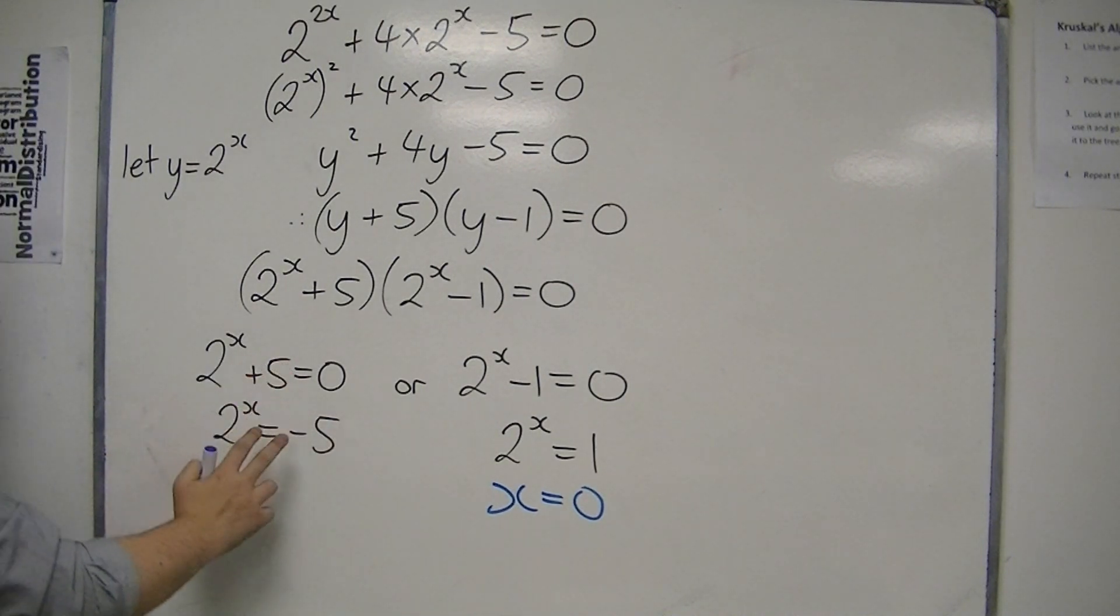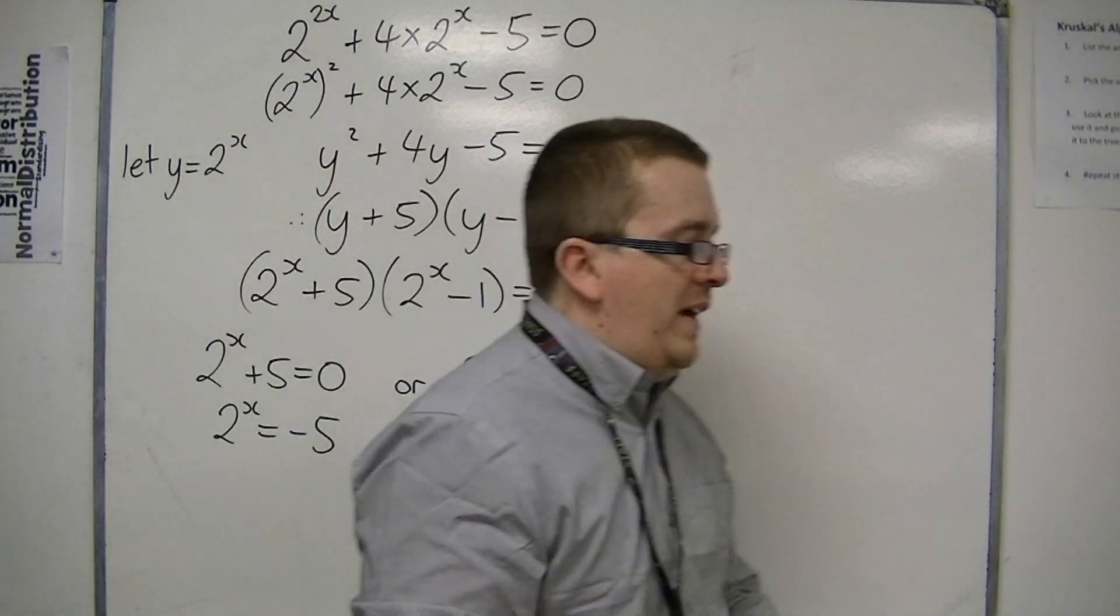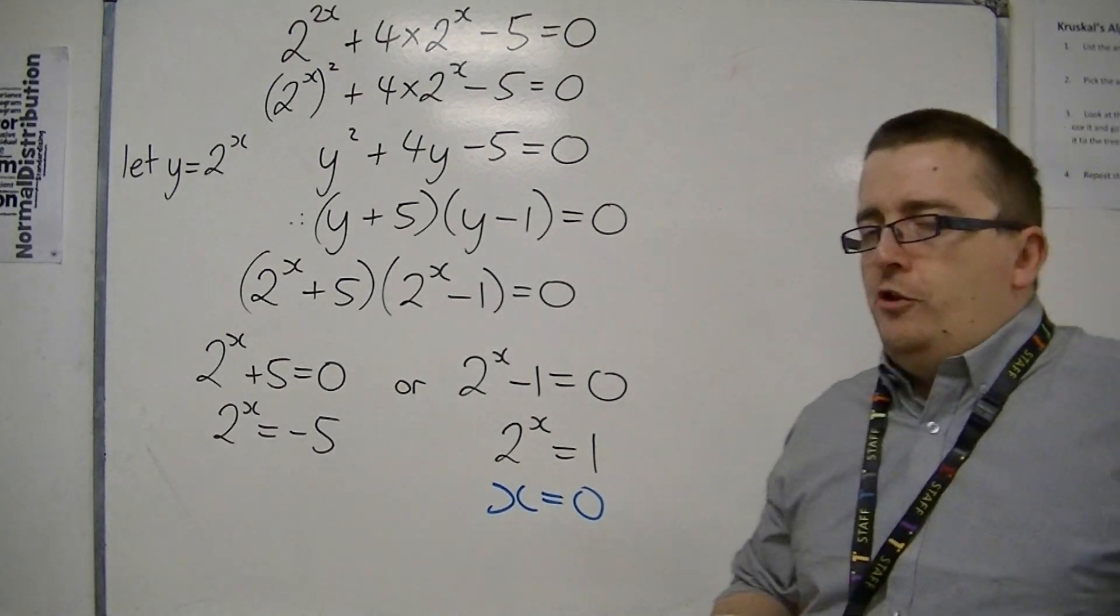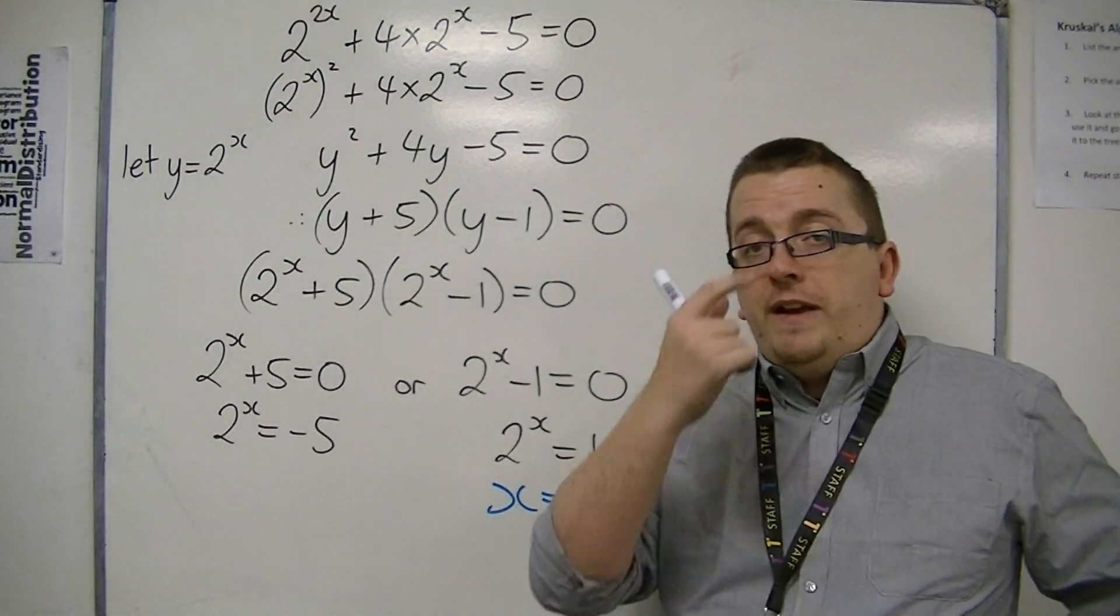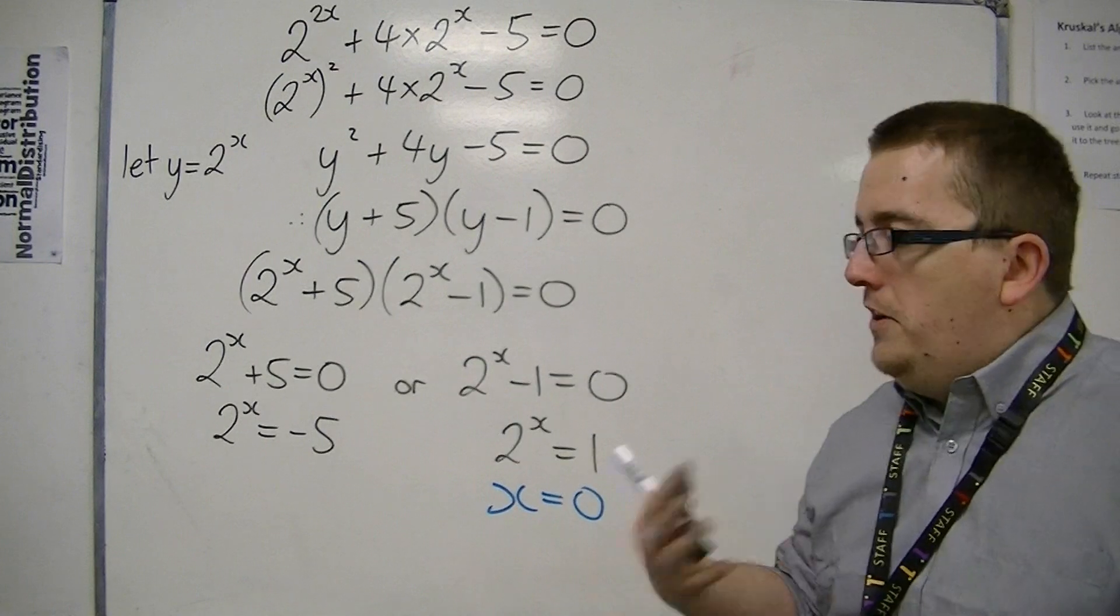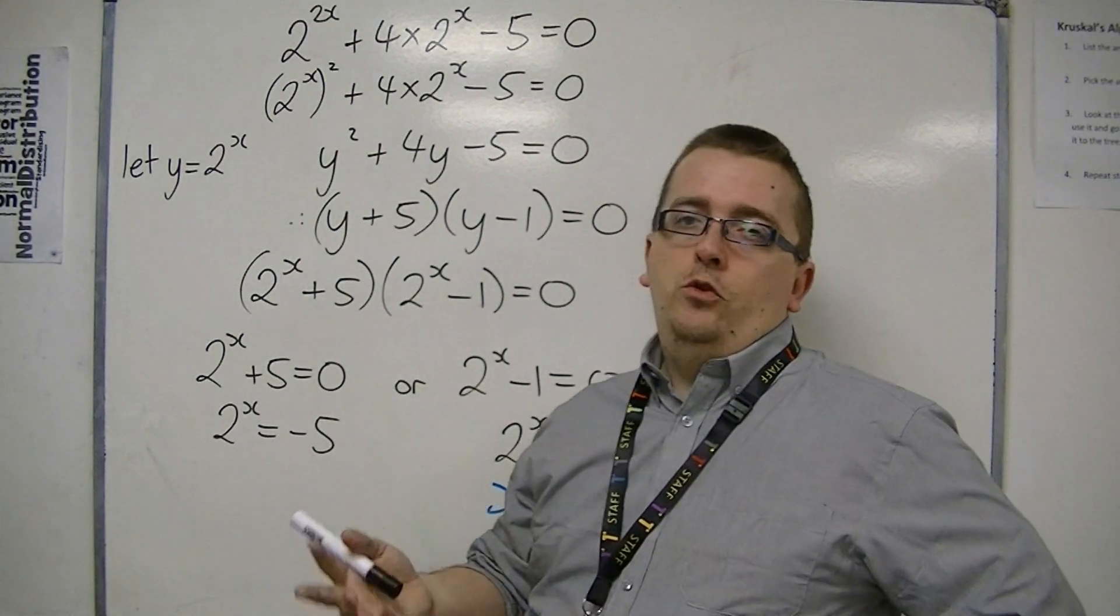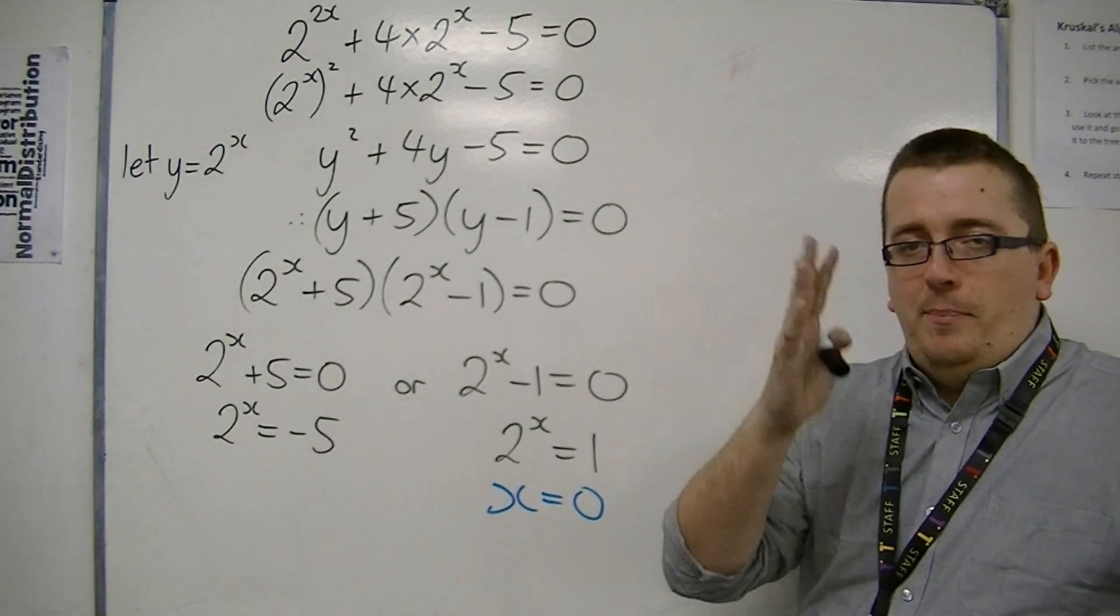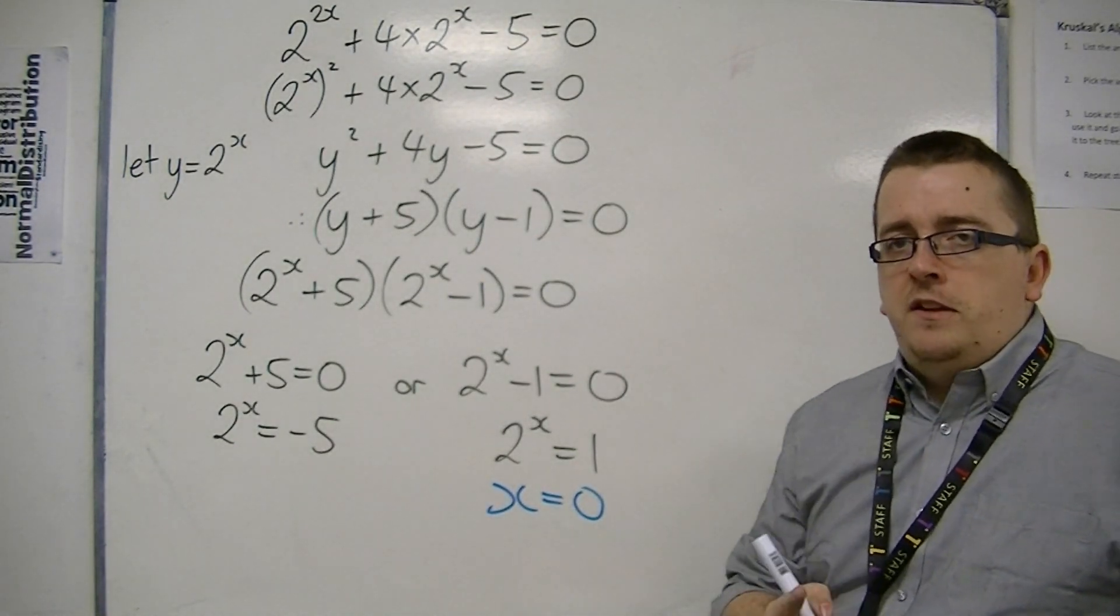And then, 2 to the x equals minus 5. Let's deal with that problem. Now we've got to think about this logically. You could try any value of x you like, be it 100, minus 100, minus 1000, minus 0.2, whatever. Whatever number you put in, 2 to that power will never be negative.